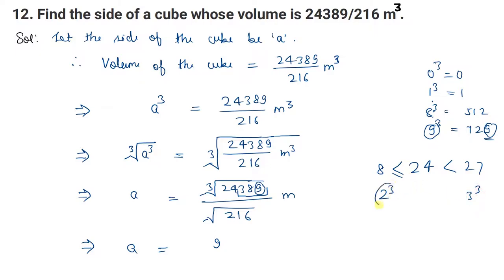24 is between 8 and 27. This means 2 cube and 3 cube. Between 2 cube and 3 cube, this 24 lies. Therefore we will say the remaining digits will be only 2. The shorter number's base we keep. That means 29 is your cube root of this number upon 6.